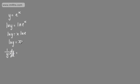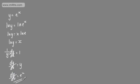I then differentiate x with respect to x, which gives 1. So multiplying both sides by y, dy by dx was equal to y. Now we know y is equal to e to the x in this case, so we can say that dy by dx was equal to e to the x, and that is a result that we can quote time and time again. If y is equal to e to the x, then dy by dx is also equal to e to the x.